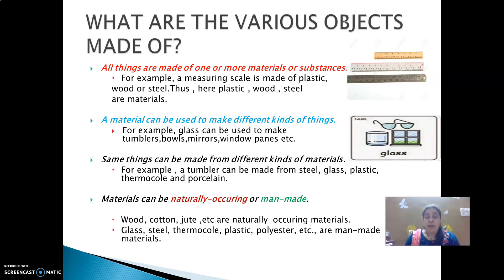Materials can be naturally occurring or man-made. What are the naturally occurring materials? Materials like wood, cotton, jute, etc. are naturally occurring materials. Now materials like glass, steel, thermacole, plastic, polyester, etc. are man-made materials.